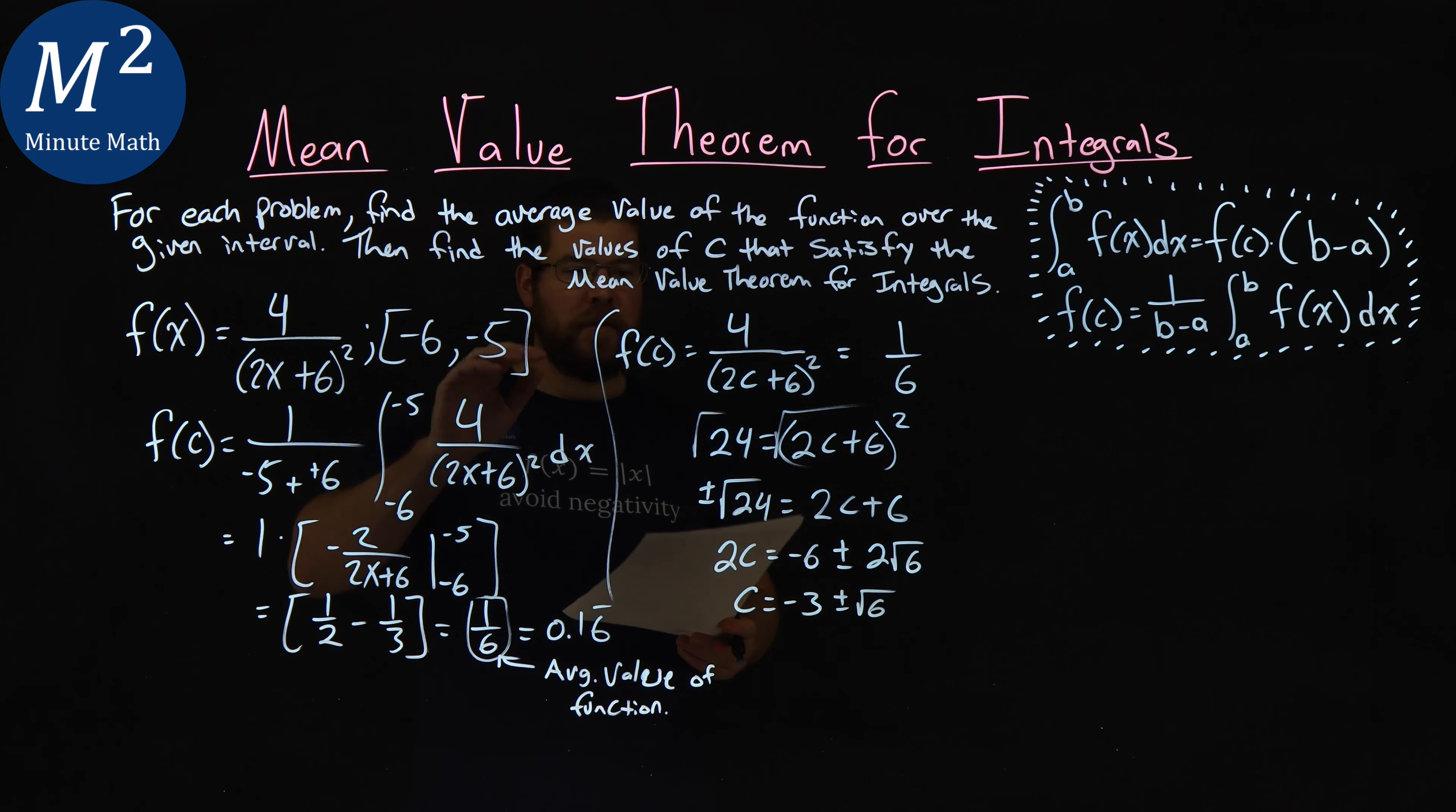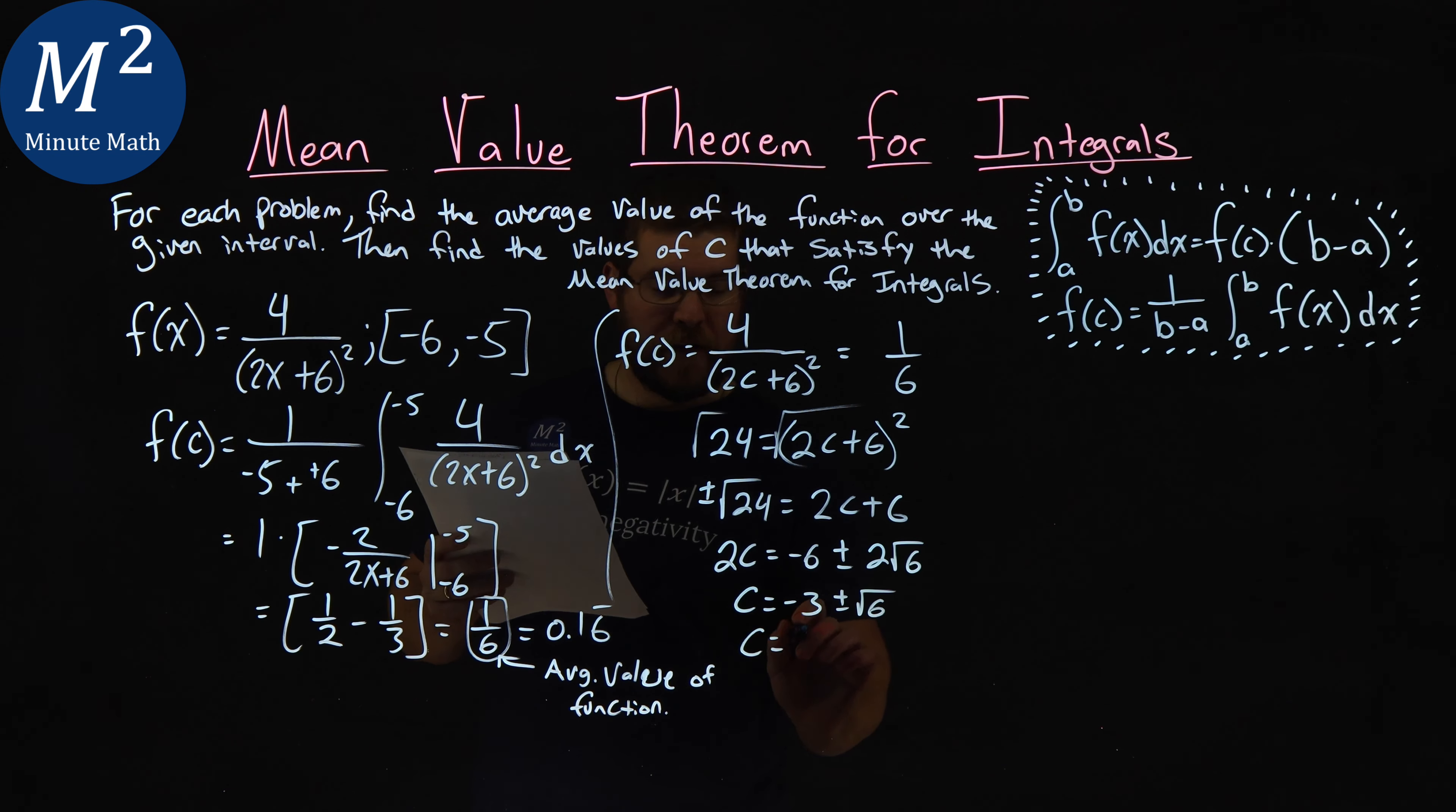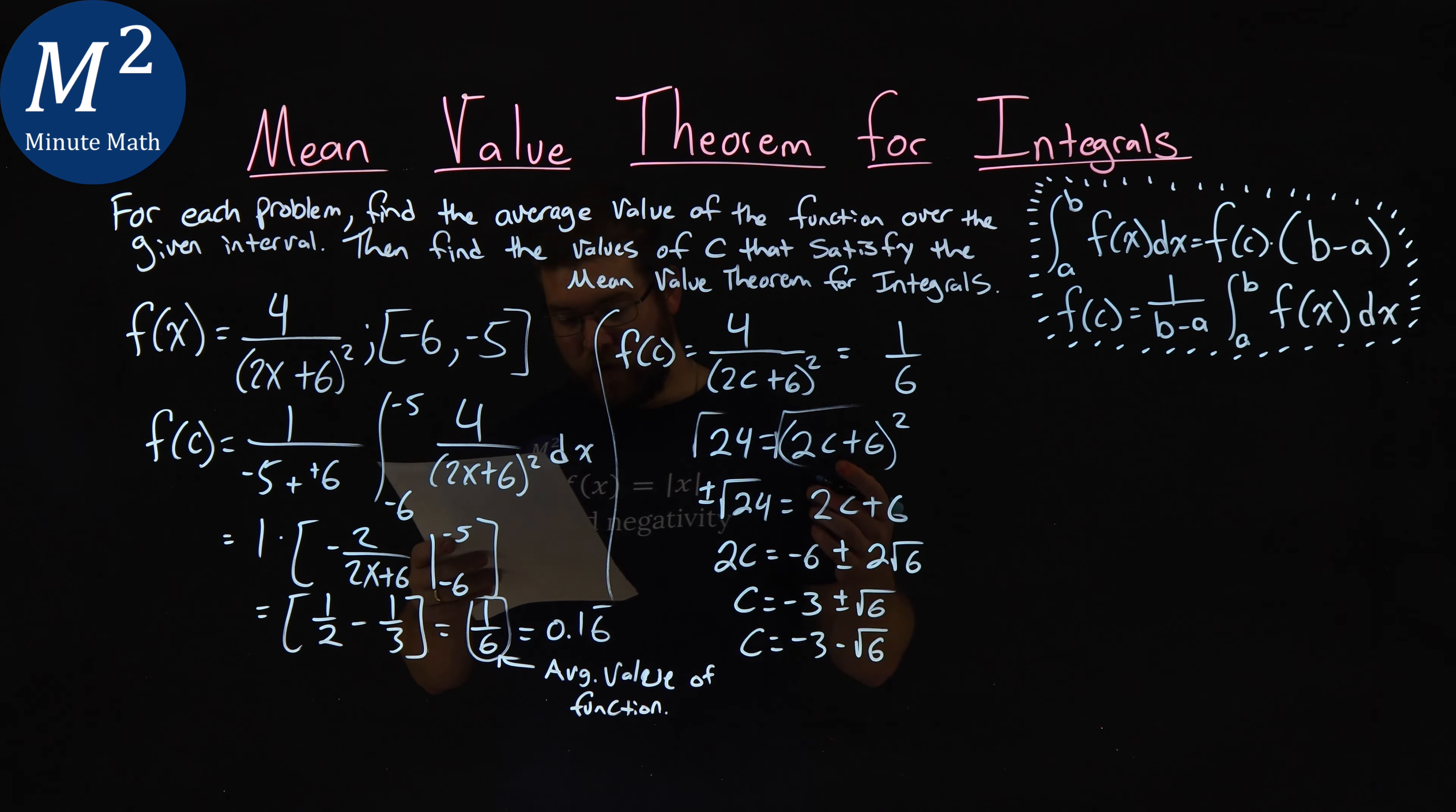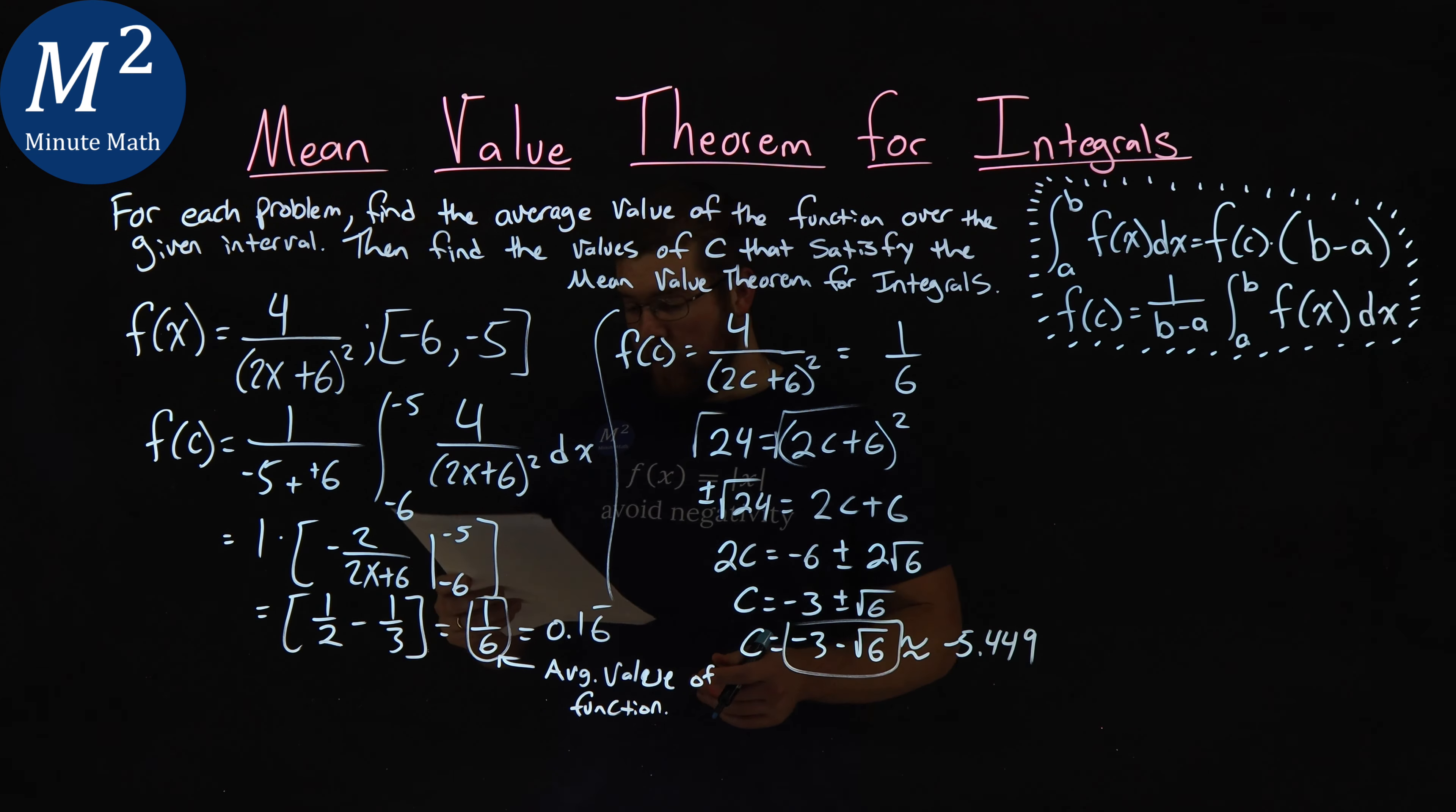And now I want to see which ones are within my interval here. And there's only one of them, the c value of the negative. So minus or minus 6. So negative 3 minus the square root of 6 is the only one of these two that's within our interval. And that's approximately a negative 5.449.